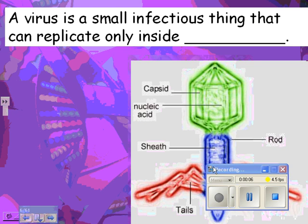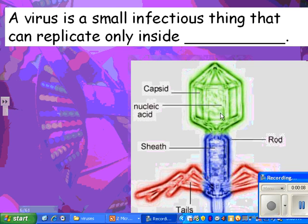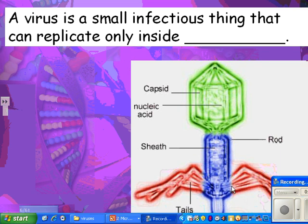Viruses. Here's a virus, and it's got DNA or RNA inside, and then it's got this protein coat called a capsid that encloses the DNA. In this case, the protein also helps to get the DNA inside the host cell, which in this case would be a bacterial cell.